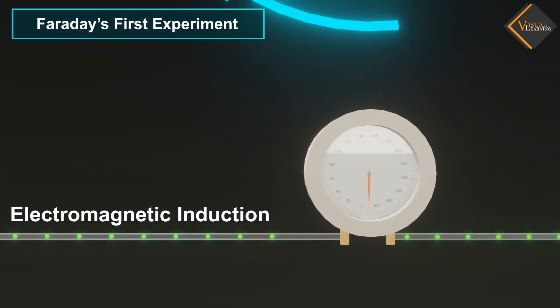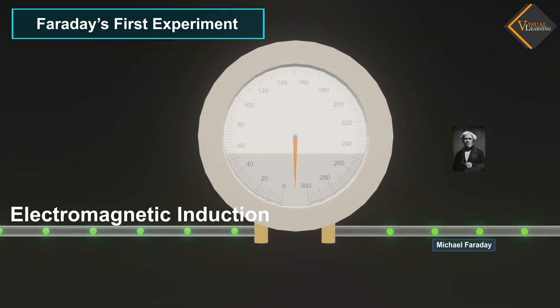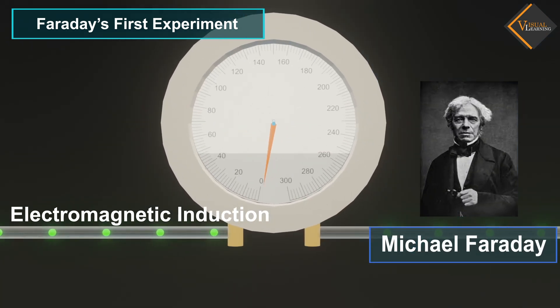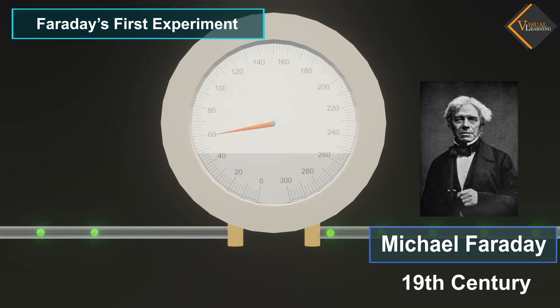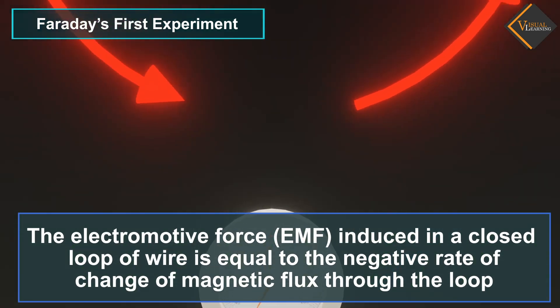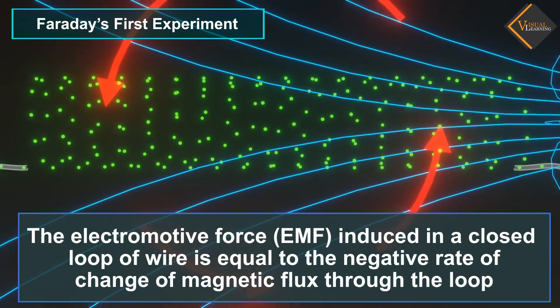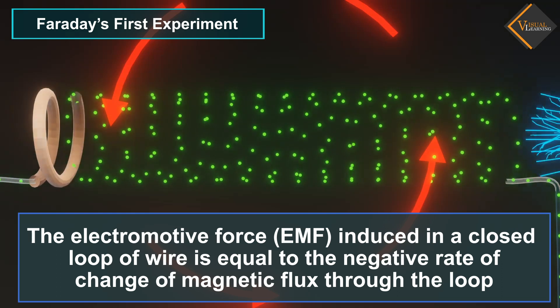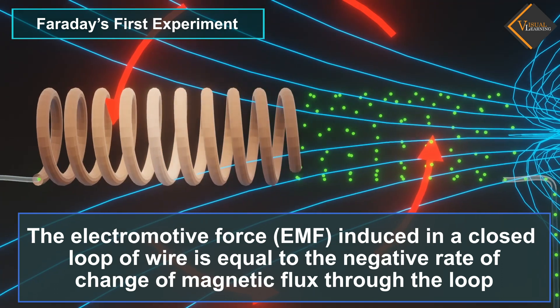This law is named after the British scientist Michael Faraday, who formulated it in the 19th century. We can define Faraday's first law as follows. The electromotive force EMF induced in a closed loop of wire is equal to the negative rate of change of magnetic flux through the loop.